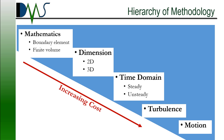The easiest way to classify this is with five different categories: mathematics, dimensions, time domain, turbulence, and motions. How you stack it all up together decides how simple or how complicated your simulation can be. You can go all the way from a simple desktop application that solves in 30 seconds to an extremely complicated application that requires a massive computer cluster.